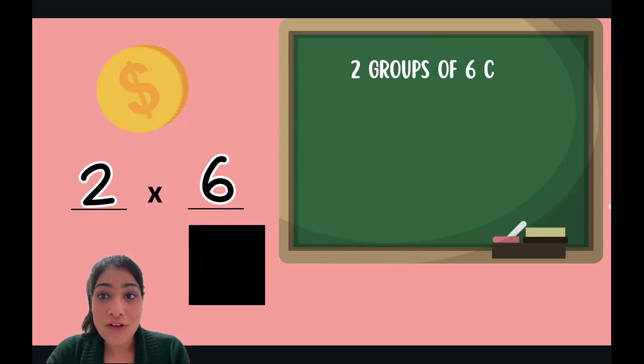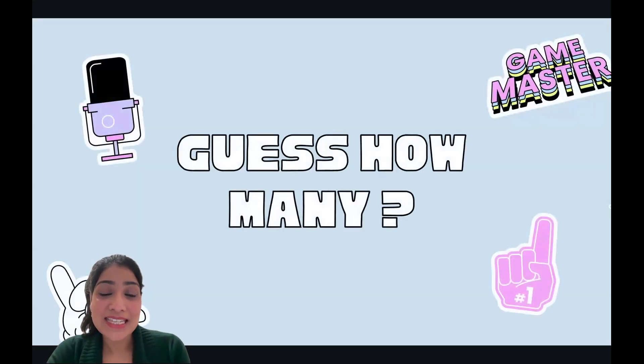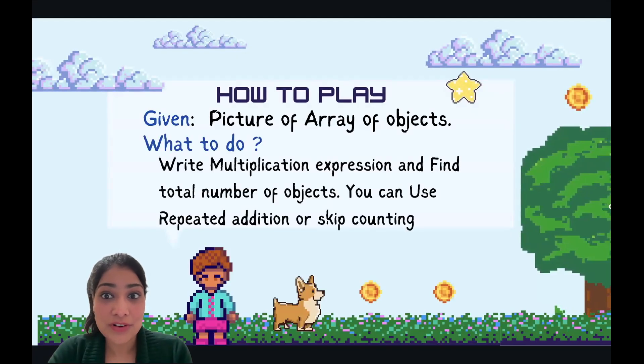Let's play one more. Two groups of six coins. Good job guys. Are you ready for your third game? That's going to be the last one, that is guess how many. How do we play this one? Well, we will be given a picture of array of objects. What do we need to do? We need to write multiplication expression and find total number of objects. You can use repeated addition or skip counting to do that.